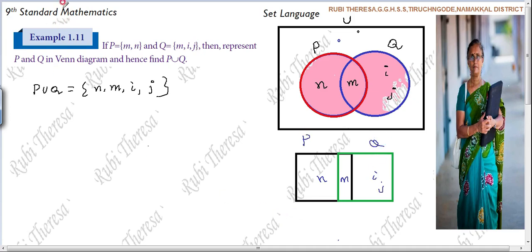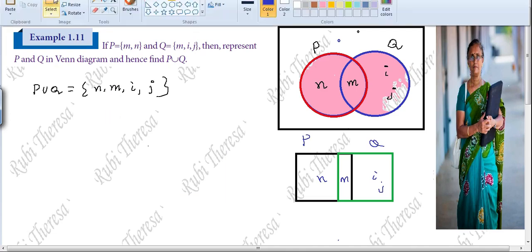Do you follow or not? So it is not compulsory. Suppose if it contains more than three sets, more than two sets. They are using triangle, rectangle, square, circle. Like this they are using. So just a representation of the sets. Pictorial representation. So it is not compulsory to have circles. It is not compulsory.